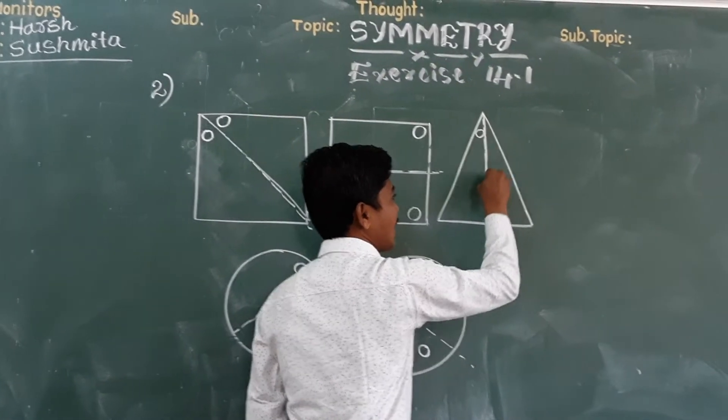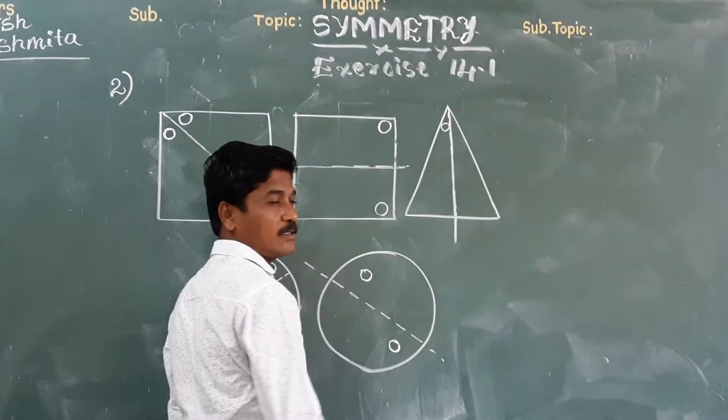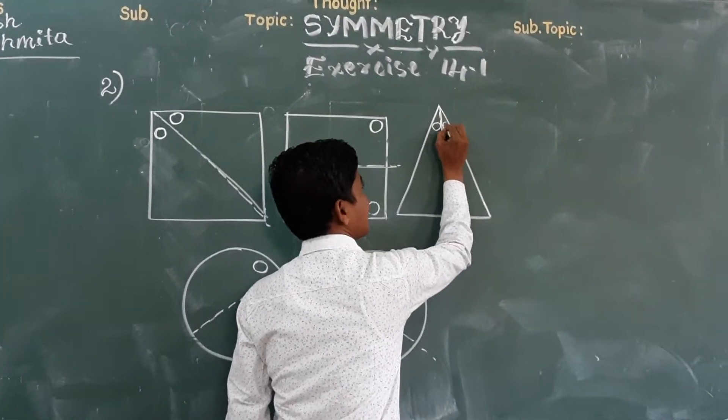Next, this one, a triangle is there. So it will fall here, is it right? Yes sir.